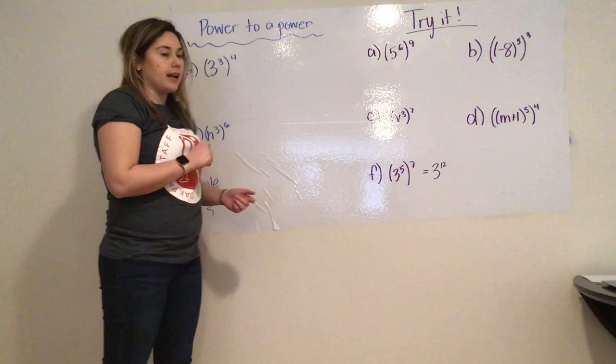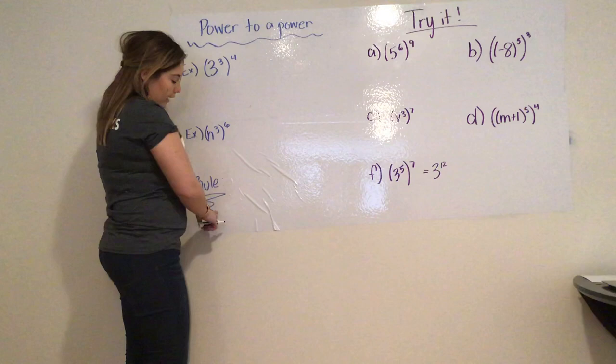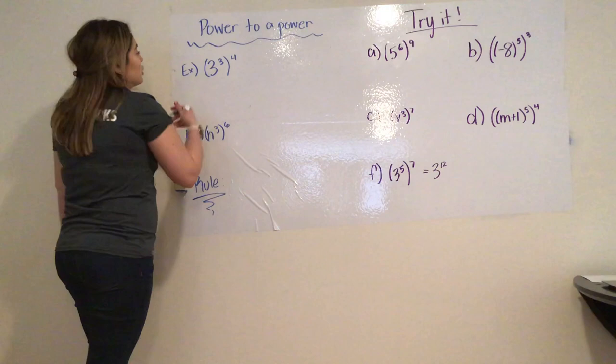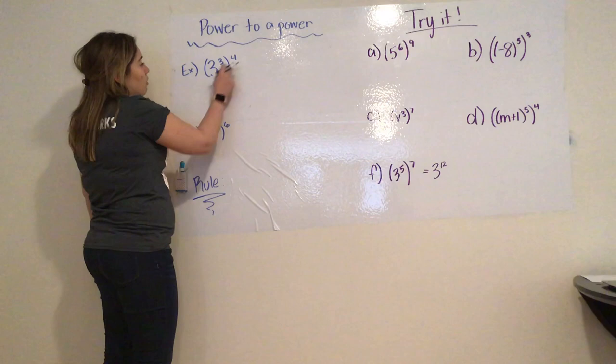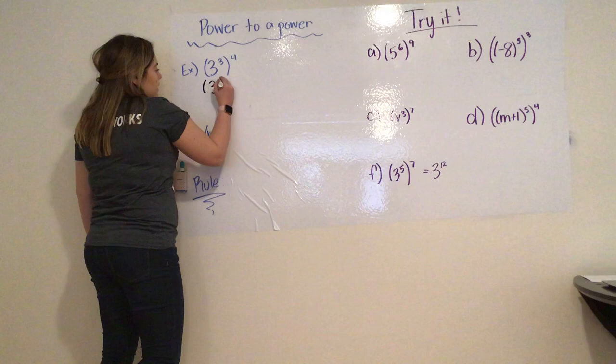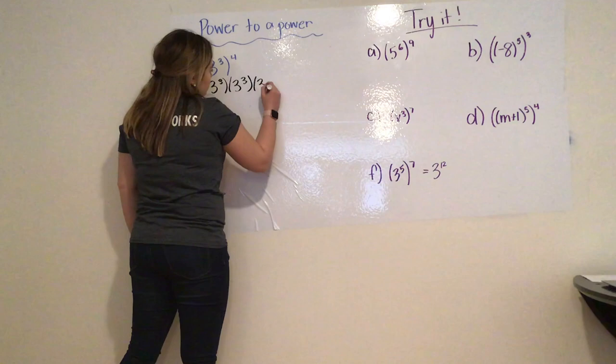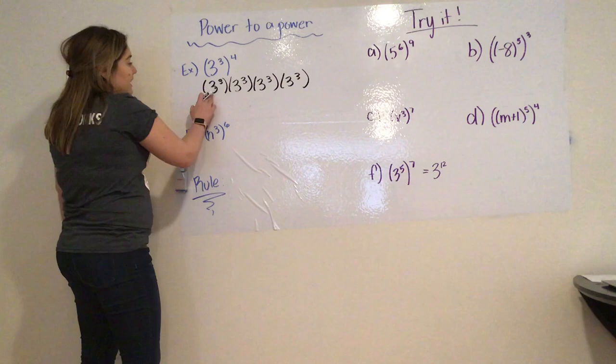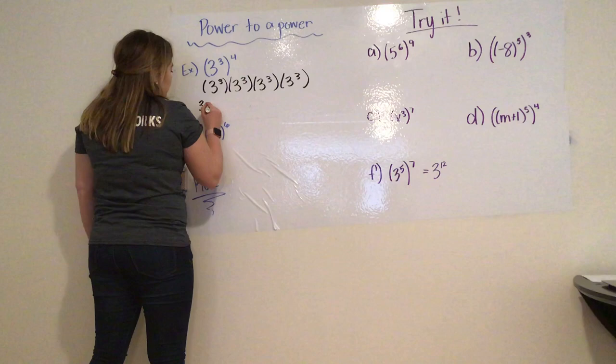So in order to figure out what the rule is when we do a power to a power, the best way to do it is to expand it. So if I have 3 to the 3rd power and it's all raised to the 4th, what that tells me first is that 3 to the 3rd is being multiplied by itself a total of 4 times. Then within each 3 to the 3rd power, that's saying it's also getting multiplied another 3 times.